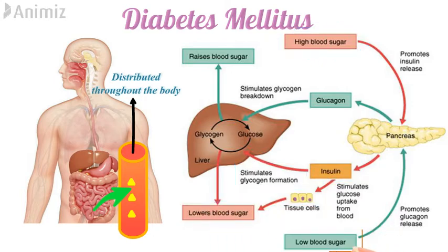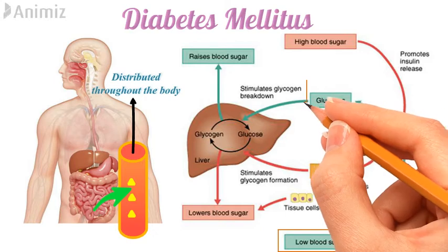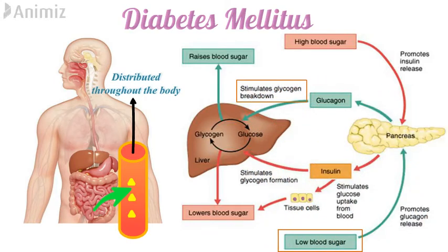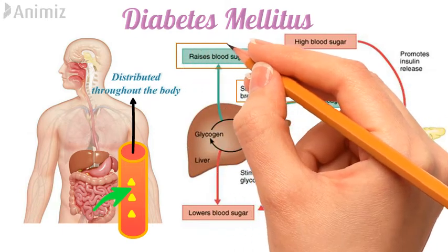Similarly, when there is a low blood sugar level, alpha cells of the pancreas secrete a hormone called glucagon, which stimulates glycogen breakdown — meaning more glycogen is converted into glucose — which ultimately increases the blood sugar level.